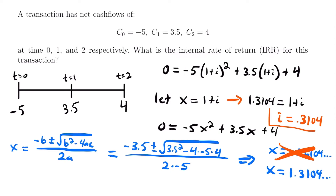Rounding off there, that will be the internal rate of return for this scenario. That is the method we use to calculate the internal rate of return by hand when we only have three cash flows. Once you have more than three cash flows, you will most likely want to use a financial calculator, because otherwise it is very hard to do by hand without a nice formula like the quadratic formula.